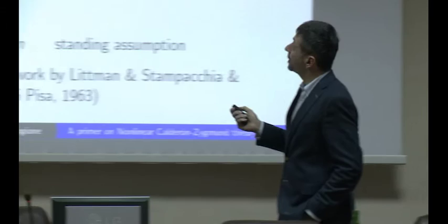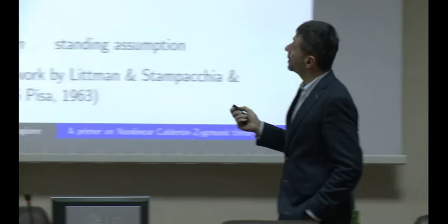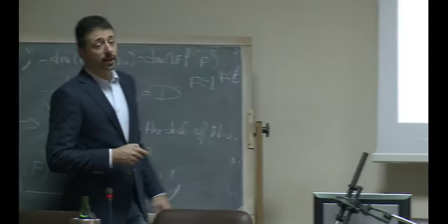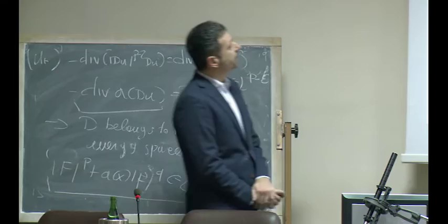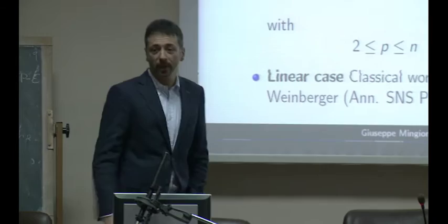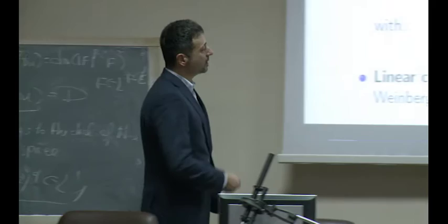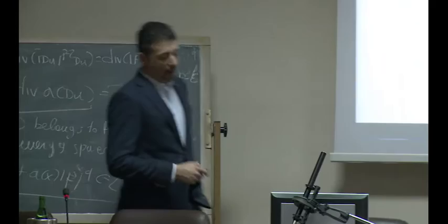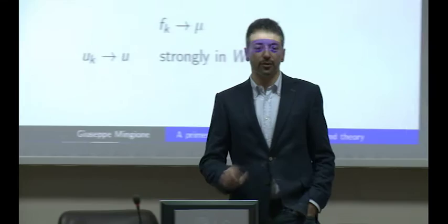So I'm going to consider these types of equations, and in particular just for simplicity I will consider the Dirichlet problem. I fix a very good domain; I don't care about the smoothness of the boundary, so Omega will be a ball and the boundary data is zero. This is a Borel measure with finite total mass, and the assumptions are the same as yesterday. This is a P-Laplacian operator.